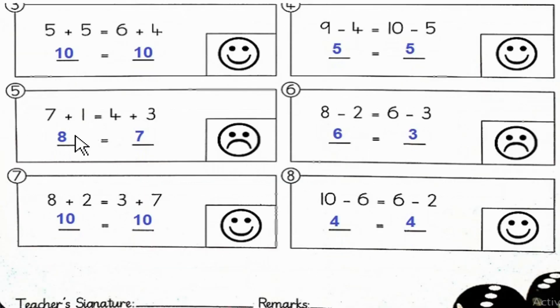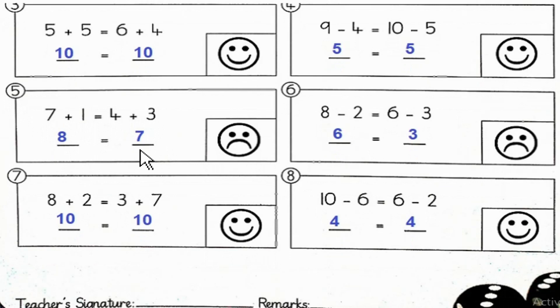Number 5: 7 plus 1 is equal to 8, and 4 plus 3 is equal to 7. These numbers are not equal, so draw a sad face.